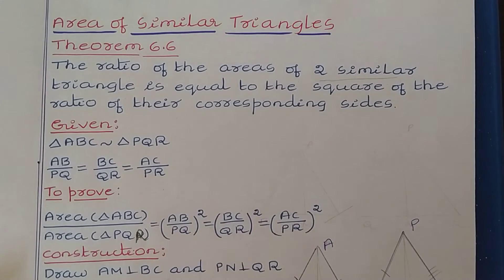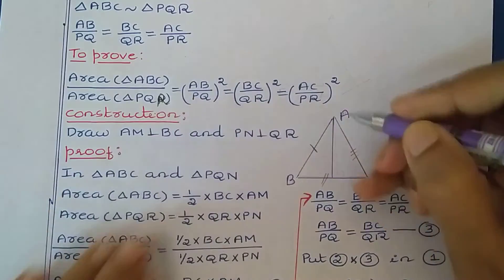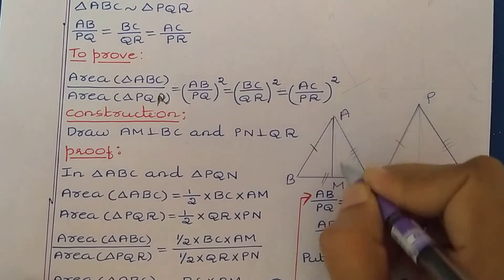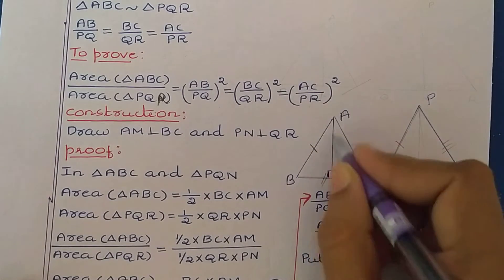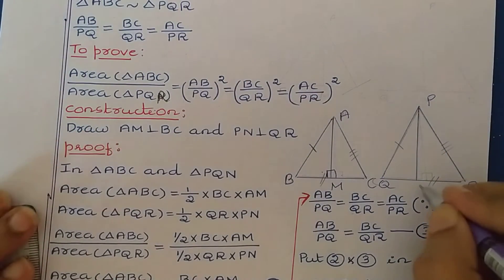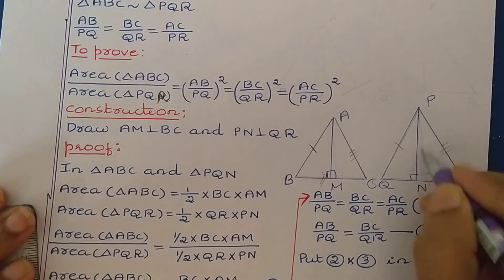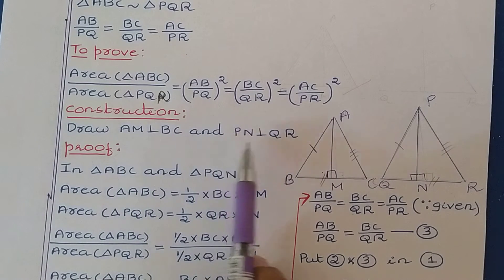To prove this, we have to make some changes in the diagram. We need to draw AM perpendicular to BC and PN perpendicular to QR — two altitudes in the diagram. AM perpendicular to BC creates a 90-degree angle on both sides. Similarly, PN perpendicular to QR also creates 90-degree angles on both sides. So this is the construction: draw AM ⊥ BC and PN ⊥ QR.